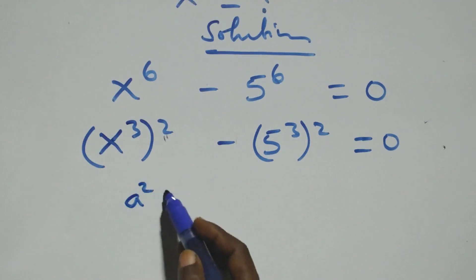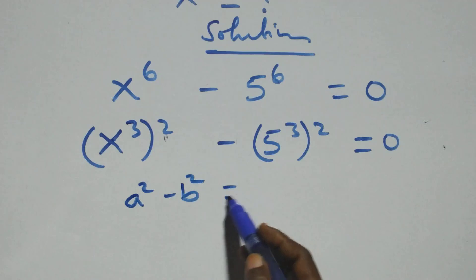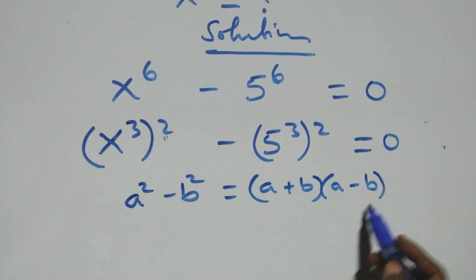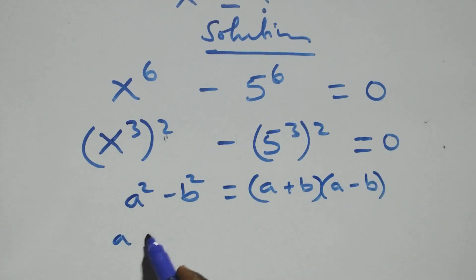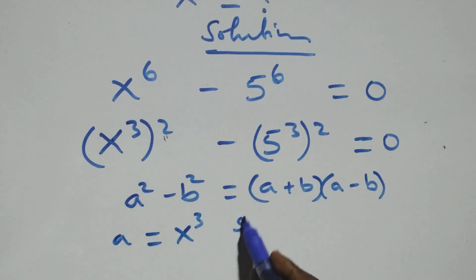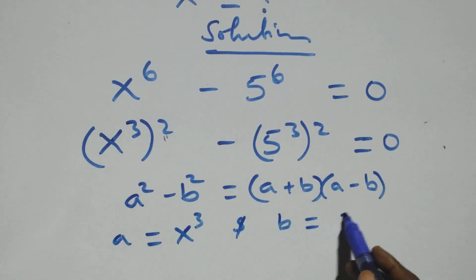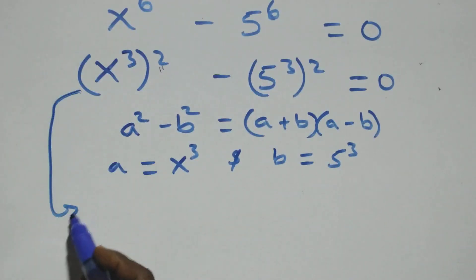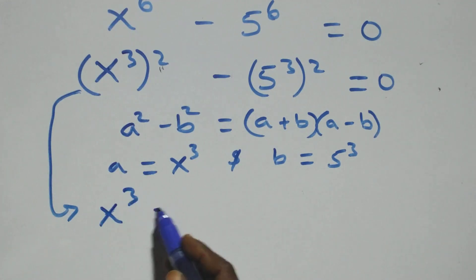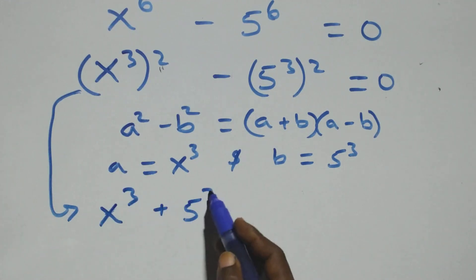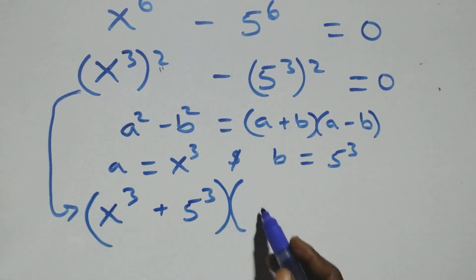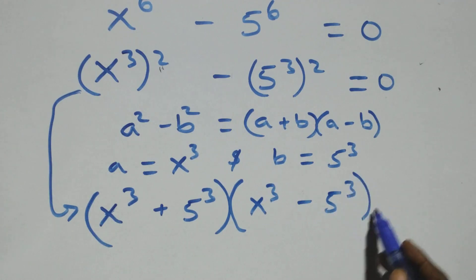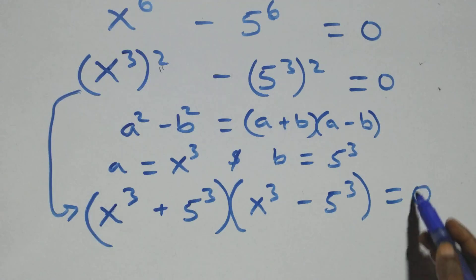Here we apply the difference of two squares: a squared minus b squared equals (a plus b)(a minus b). With a standing as x raised to power 3 and b standing as 5 raised to power 3, this becomes (x raised to power 3 plus 5 raised to power 3) times (x raised to power 3 minus 5 raised to power 3) equals zero.